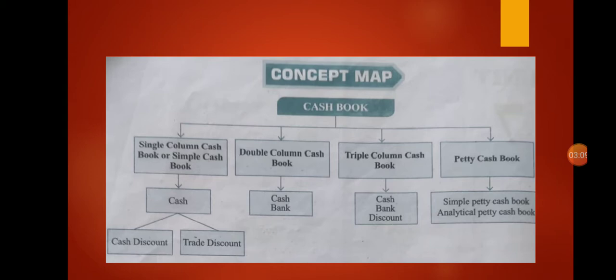The second category is trade discount. Trade discount is a deduction given by the supplier to the buyer on the list price or catalog price of the goods. It is given as a trade practice or when goods are purchased in large quantities. It is shown as a deduction in the invoice. Trade discount is not recorded in the books of accounts — only the net amount is recorded.